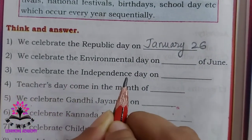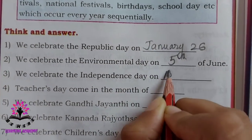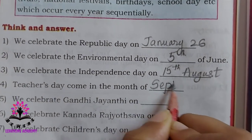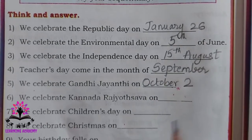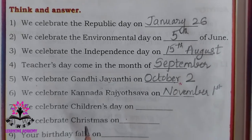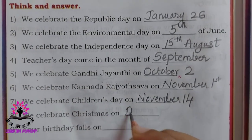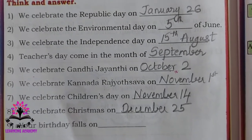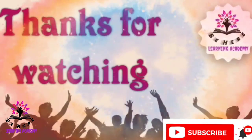Think and answer. We celebrate Republic Day on January 26. We celebrate Environment Day on 5th June. We celebrate Independence Day on 15th August. Teachers' Day comes in September. We celebrate Gandhi Jayanti on October 2nd. We celebrate Kannada Rajyotsava on November 1st. We celebrate Children's Day on November 14th. We celebrate Christmas on December 25th. Write your own date of birth and complete the match-the-following activity by yourself.